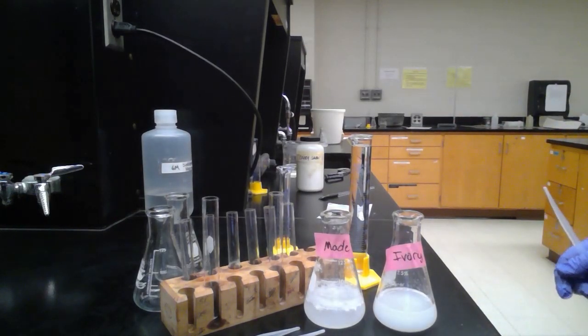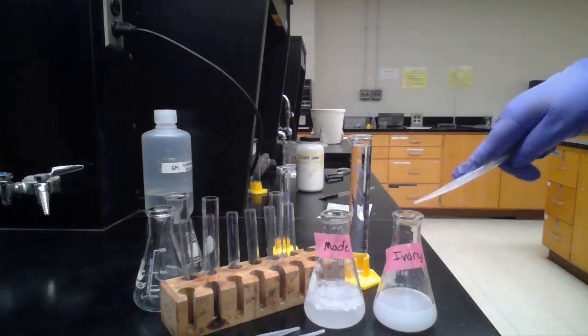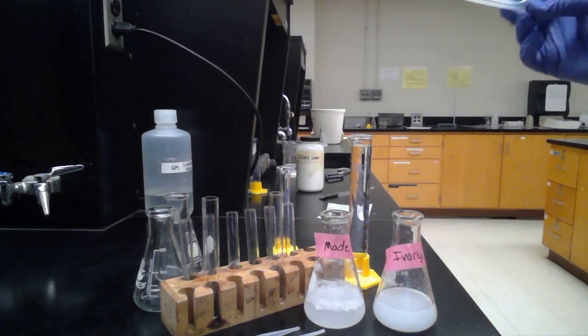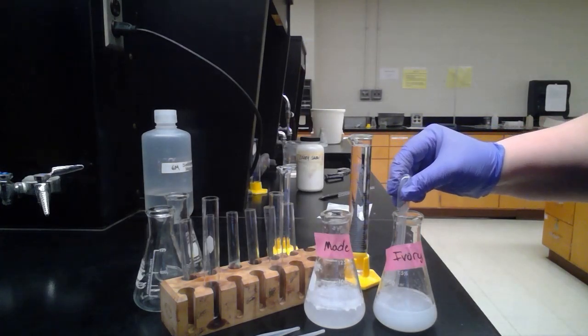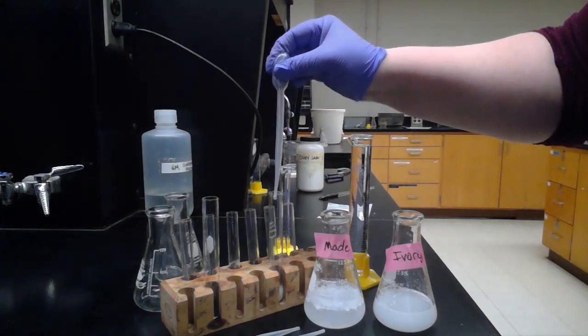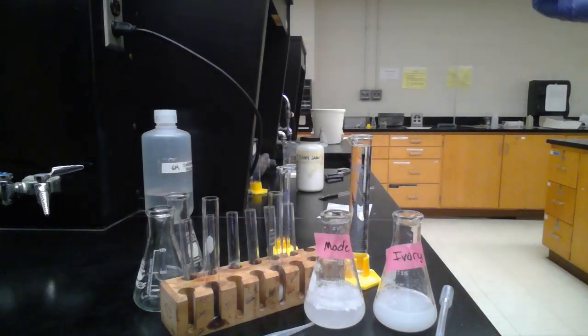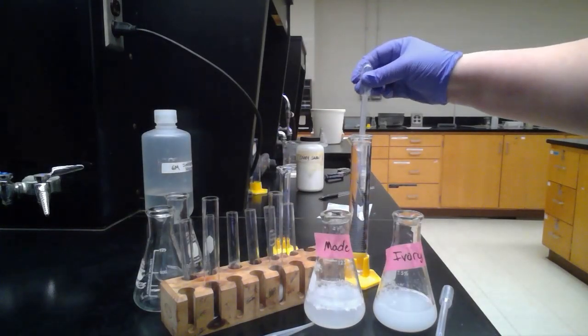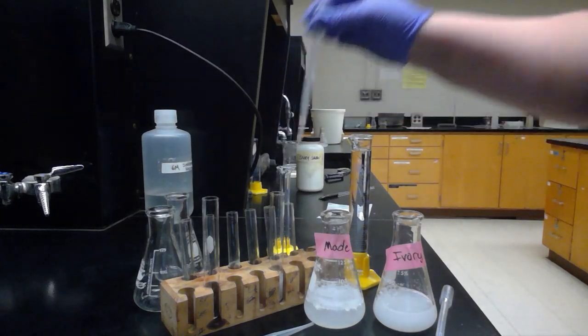Now I'm going to do the foam test. We're going to take one full pipette of our ivory soap, the control soap, and put that into a medium beaker. I'll pull up one full pipette sample of that, and then I'm going to add three full pipettes of distilled water to my medium-sized beaker.